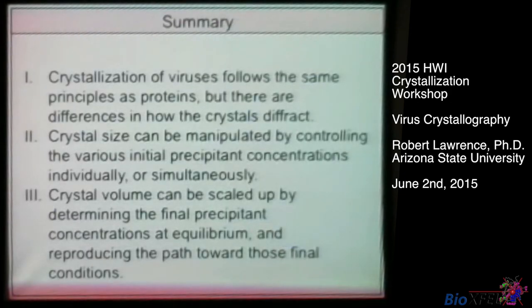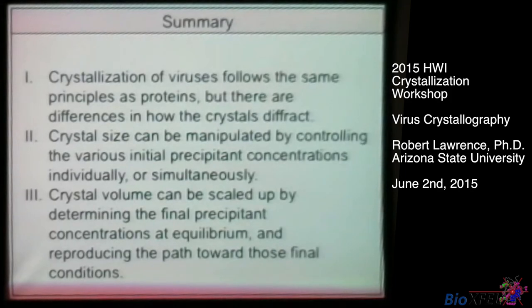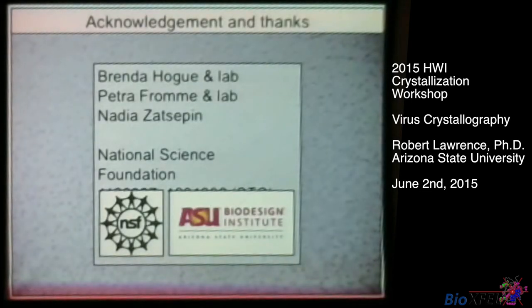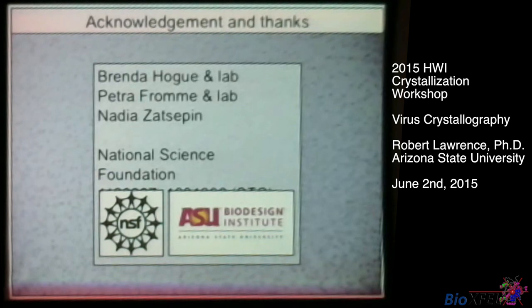In summary: virus crystallization follows pretty much the same principles as proteins, but there are differences to be aware of in how diffraction data is collected and processed. Crystal sizes can be controlled by manipulating individual conditions or multiple conditions together, and we can scale up the volume of crystallization, but we have to calculate the equilibration buffer first. I want to acknowledge Brenda Hogue and my lab mates, as well as Petra Fromme and her lab where I've learned a lot about basic principles of crystallization, and Nadia, who helped provide some of the data, as well as the National Science Foundation. I'll be happy to take any questions.